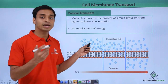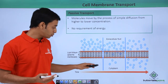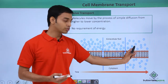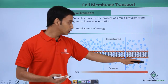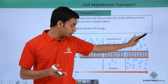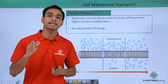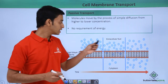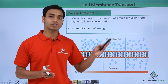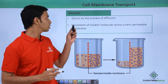Here we can see a lipid bilayer — the plasma membrane of a eukaryotic cell. Some molecules are present in very high concentration outside the cell, whereas inside the cytoplasm the molecules are absent. With time, some of the molecules diffuse inside, and equilibrium is reached where the concentration inside and outside the cell is almost similar. This happens only because of simple diffusion from higher to lower concentration, with no requirement of energy.